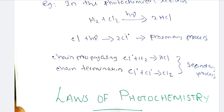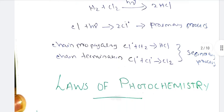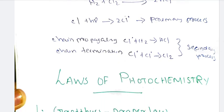Secondary processes include chain propagation step and chain termination step. Chain initiation step occurs in the primary process.